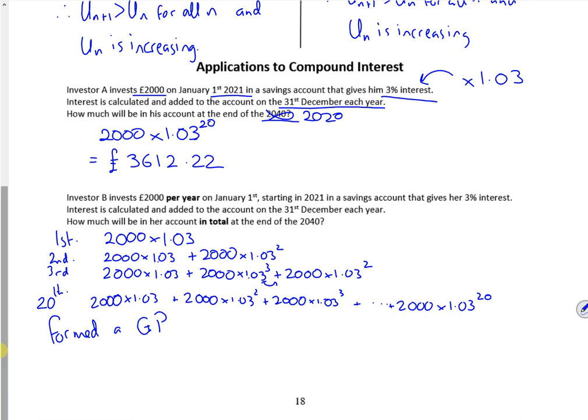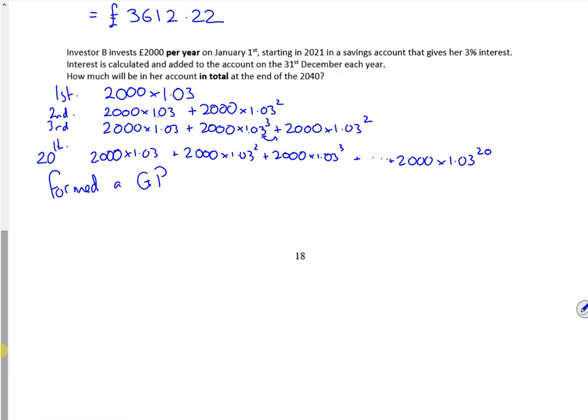Now if you look, you've kind of formed a GP, and there's two different ways of doing it. You could take the 2000 out as a factor, and then have it as 1.03 plus 1.03 squared. This gives me a GP where a is 2060 times 1.03, and r is 1.03.